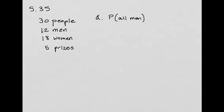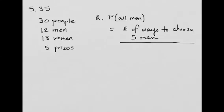So to find the probability that all men win the prizes, we're going to calculate the number of ways to choose five men, and we'll divide that by the number of ways to choose five people.